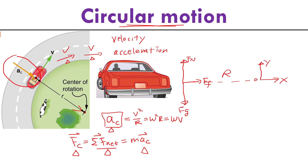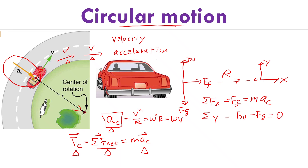Along the x-direction, sigma Fx equals the friction force pointing to the rotation center, which equals mass times centripetal acceleration. Along the y-direction, normal force minus gravity equals zero since there is no vertical motion. So what is supporting my centripetal acceleration? It is friction. In this specific situation, the friction force acts as the centripetal force.